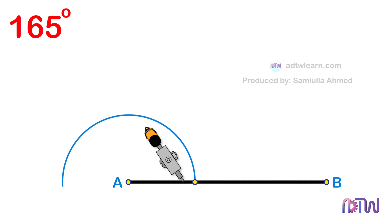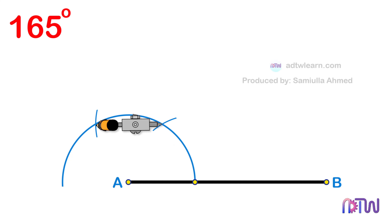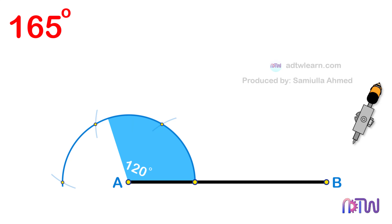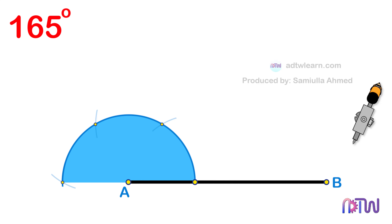Using this intersection point as a center, cut the arcs as shown. We can see that the angle from here to this point is 60 degrees, it will be 120 degrees up to here, and 180 degrees up to here. But we need a 150-degree angle.